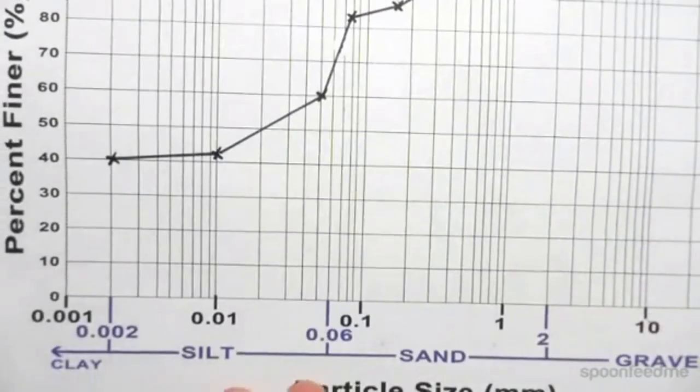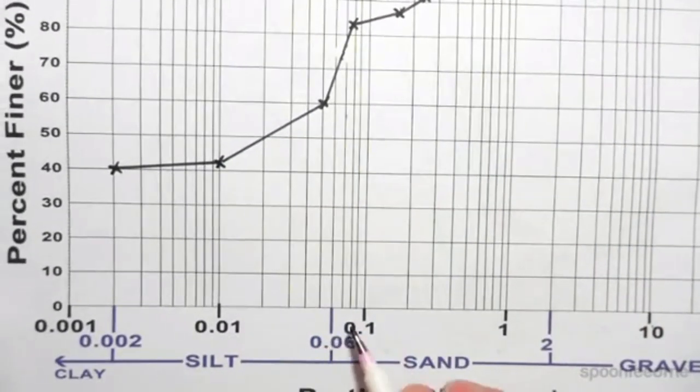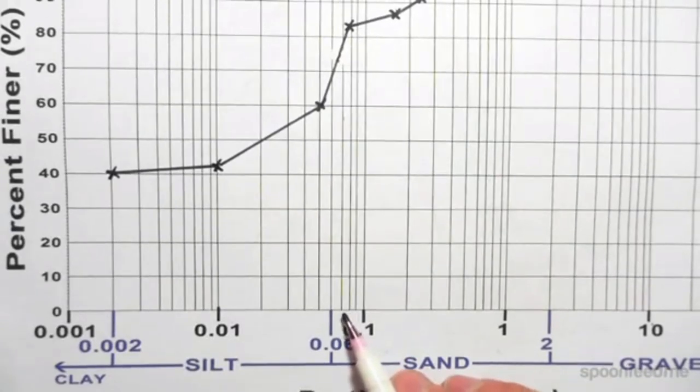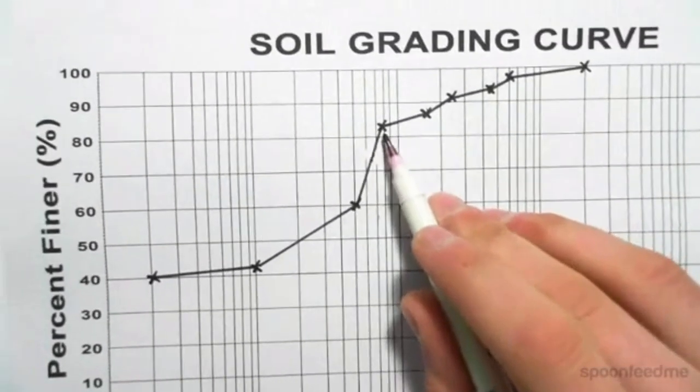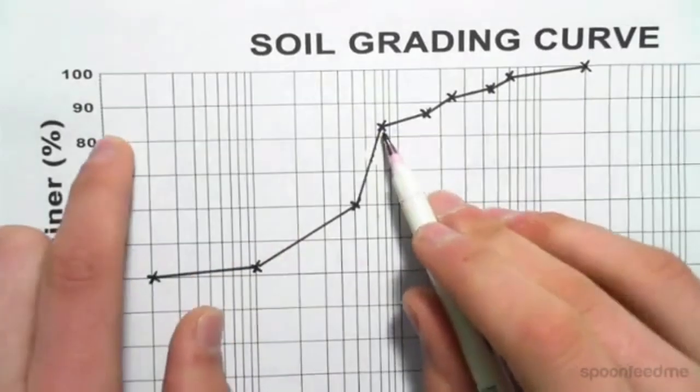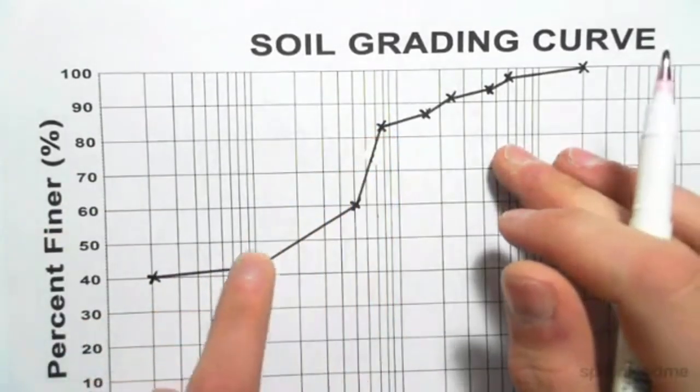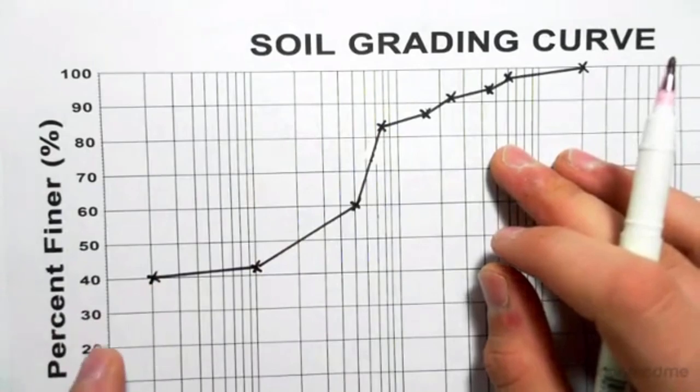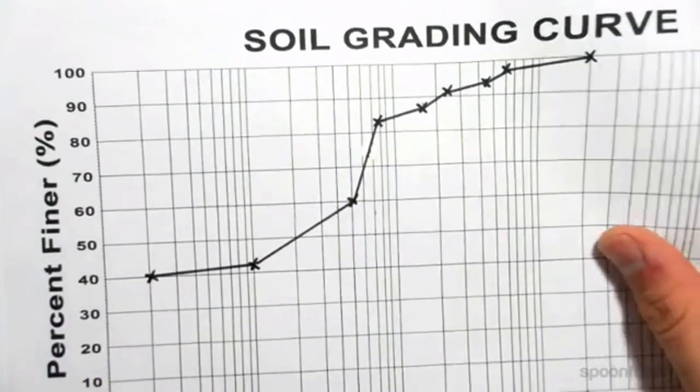We could have also seen this graphically from our grading curve. So 0.06, 0.07, 0.075 is up that point there, and that's at around 84%. So we can see that everything below this is fine, and this just continues on, but we can't measure beyond 0.02 because it's too fine.